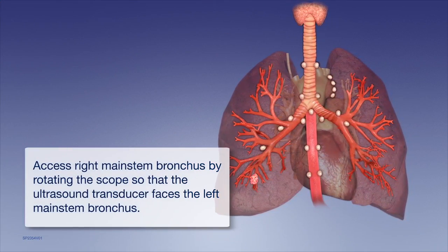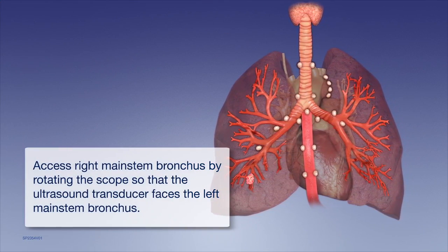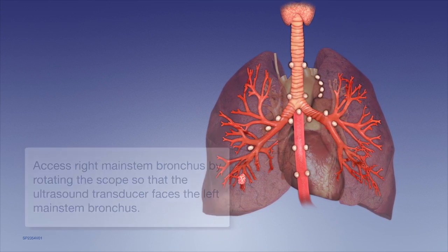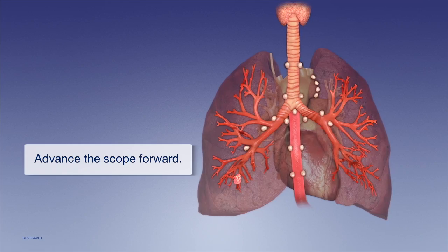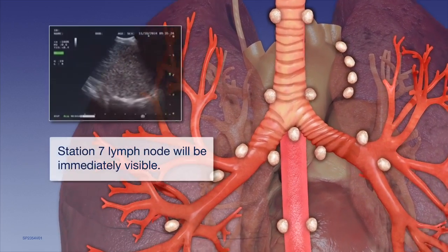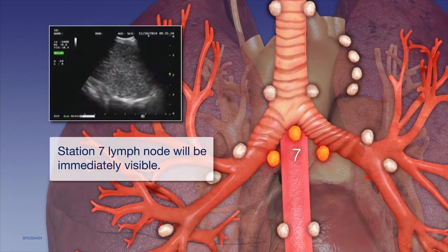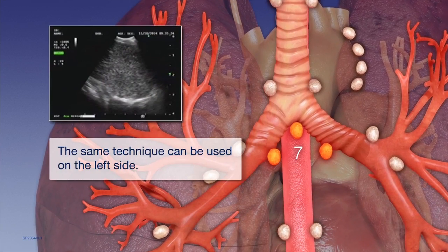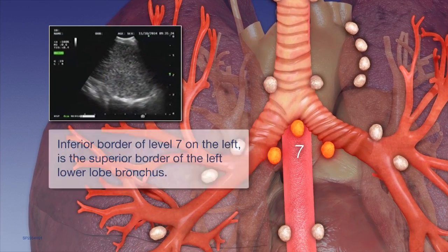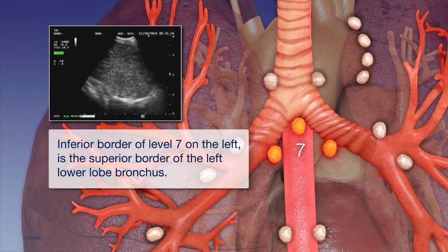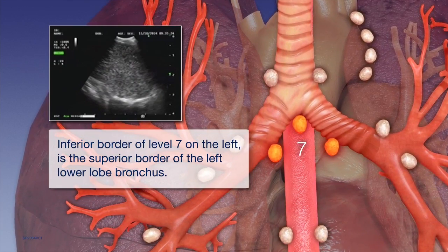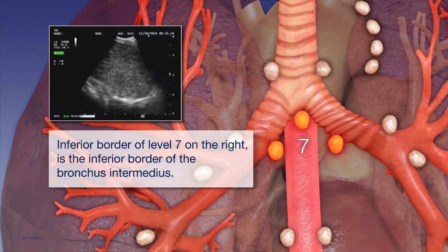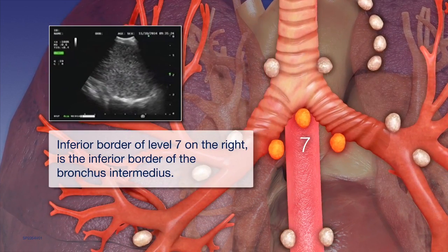Access the right mainstem bronchus by rotating the scope to face the left mainstem bronchus and then advancing. Using this technique, the Station 7 lymph node will be immediately visible. The same technique can be used on the left side. The inferior border of Level 7 on the left is the superior border of the left lower lobe bronchus, and on the right side is the inferior border of the bronchus intermedius.